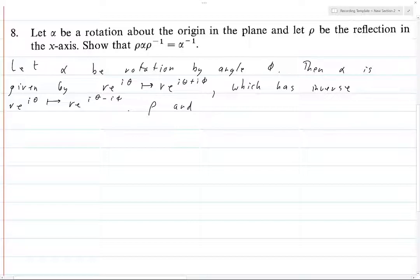Rho and rho inverse are given by R e to the i theta, and I'll put on the next line, map to R e to the minus i theta because it just flips the plane.